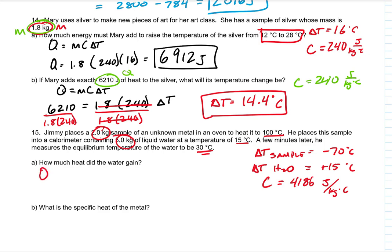How much heat did the water gain? This is for the water. We're going to take the mass of water, 5 kilograms, times the specific heat of water, 4,186 joules per kilogram degree Celsius, times the delta T for water of 15 degrees Celsius. So the kilograms go away, the degrees Celsius go away. We're left with joules, and that Q comes out to be 313,950 joules, which is a little bit of heat.